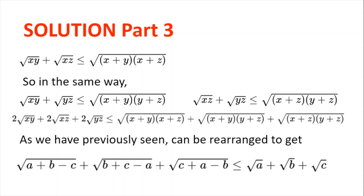So √(xy) plus √(xz) ≤ √((x+y)(x+z)). In the same way, we prove that √(xy) plus √(yz) ≤ √((x+y)(y+z)), and √(xz) plus √(yz) ≤ √((x+z)(y+z)). Adding all of these inequalities up, we get 2√(xy) plus 2√(xz) plus 2√(yz) less than or equal to √((x+y)(x+z)) plus √((x+y)(y+z)) plus √((x+z)(y+z)). We can then rearrange this to obtain √(a+b−c) plus √(b+c−a) plus √(c+a−b) ≤ √a plus √b plus √c, which was what we needed to prove. We just backtracked our steps.